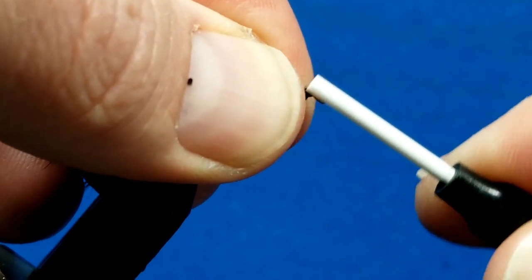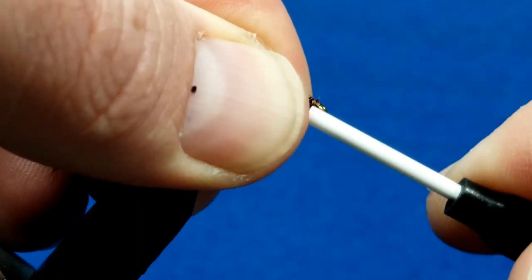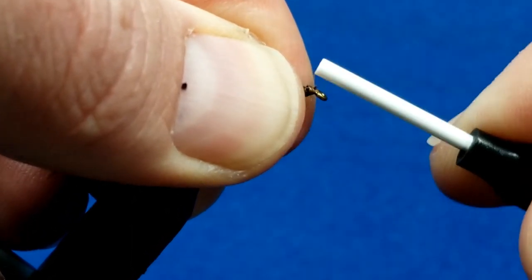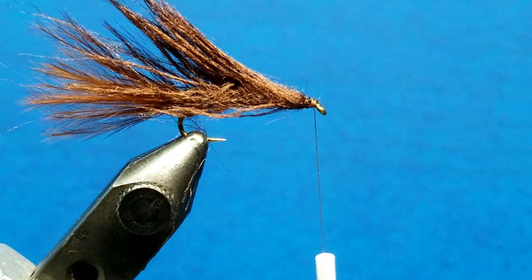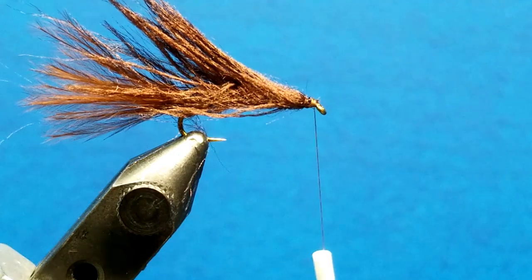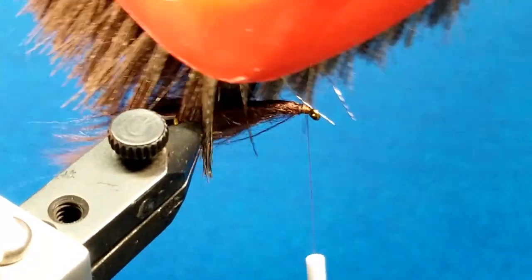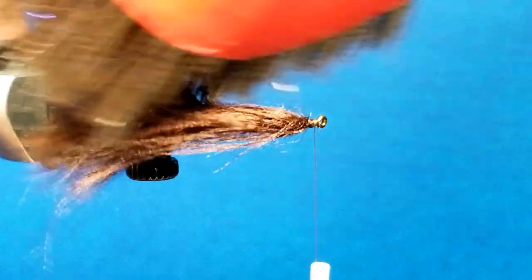So I'm going to catch the end of that and create just a little bit of a thread head, nothing terribly significant. Before I tie that off I'm just going to come in and take a look at it. I can hit this with the wire brush real quick just to kind of knock loose some of the fibers.